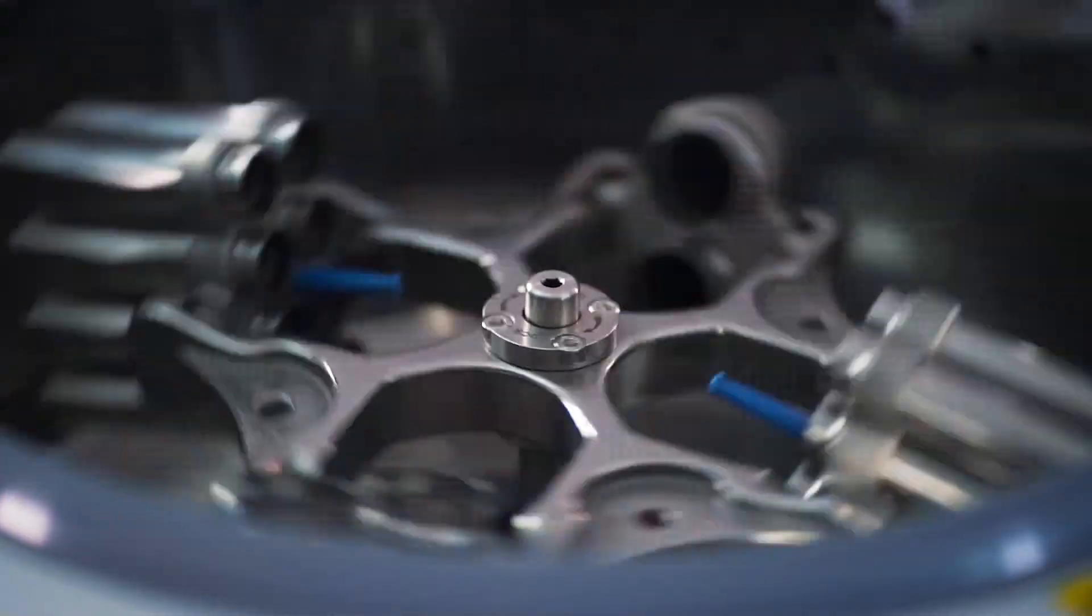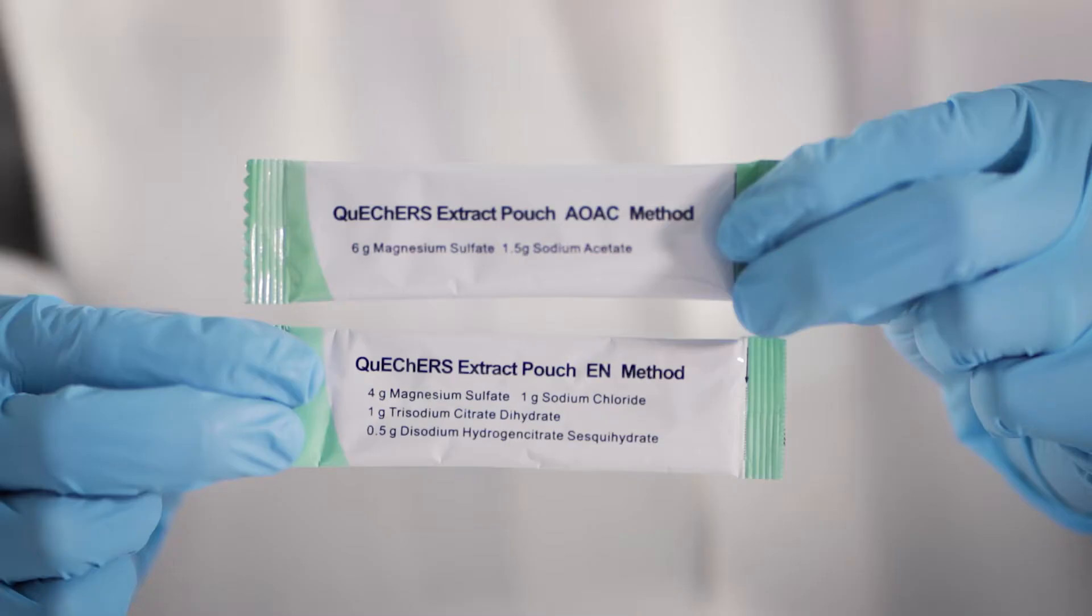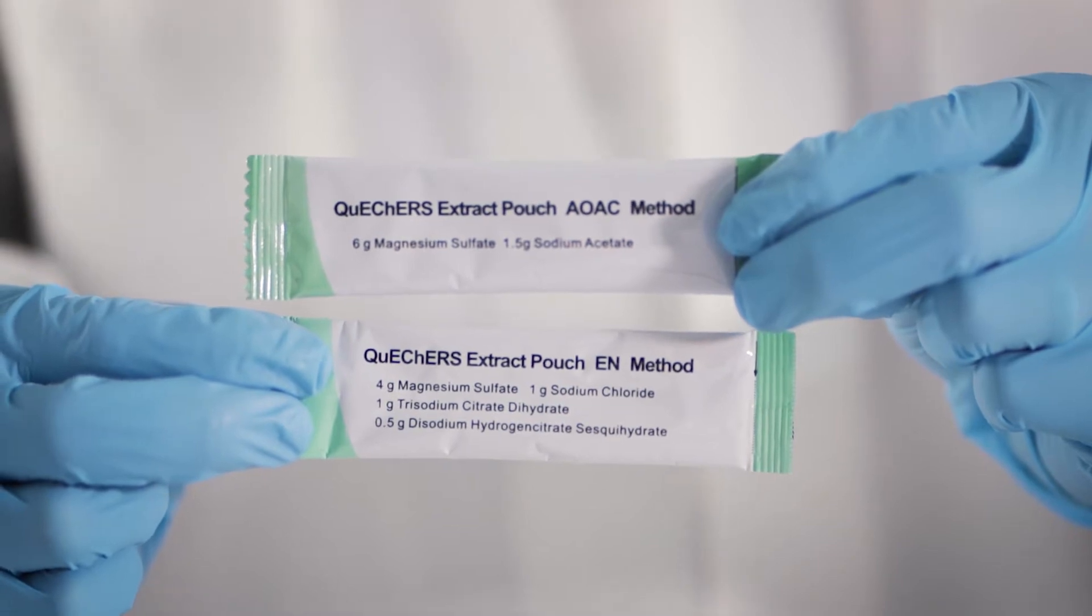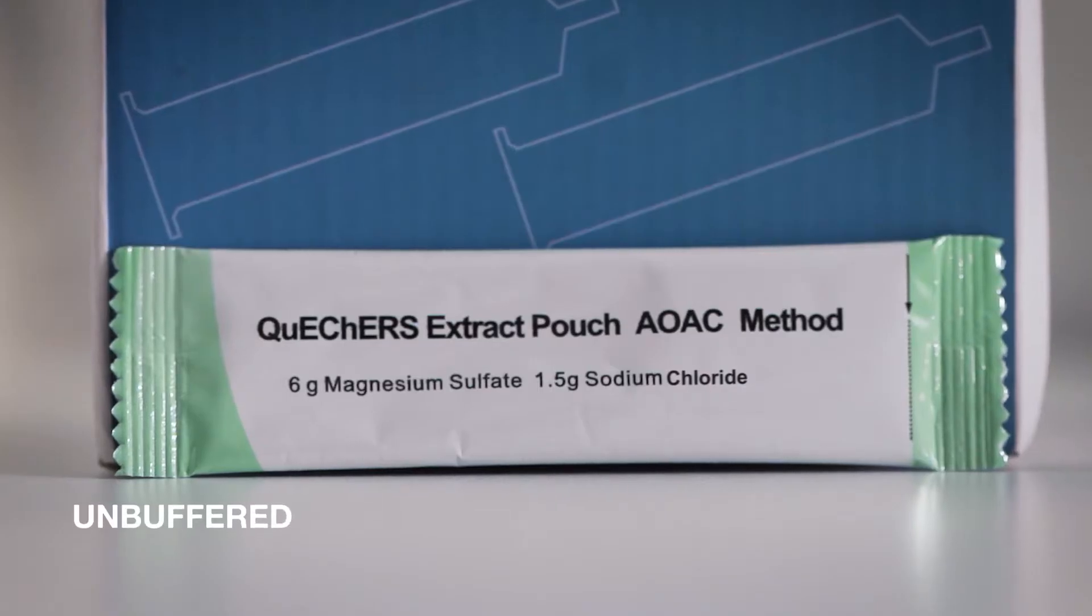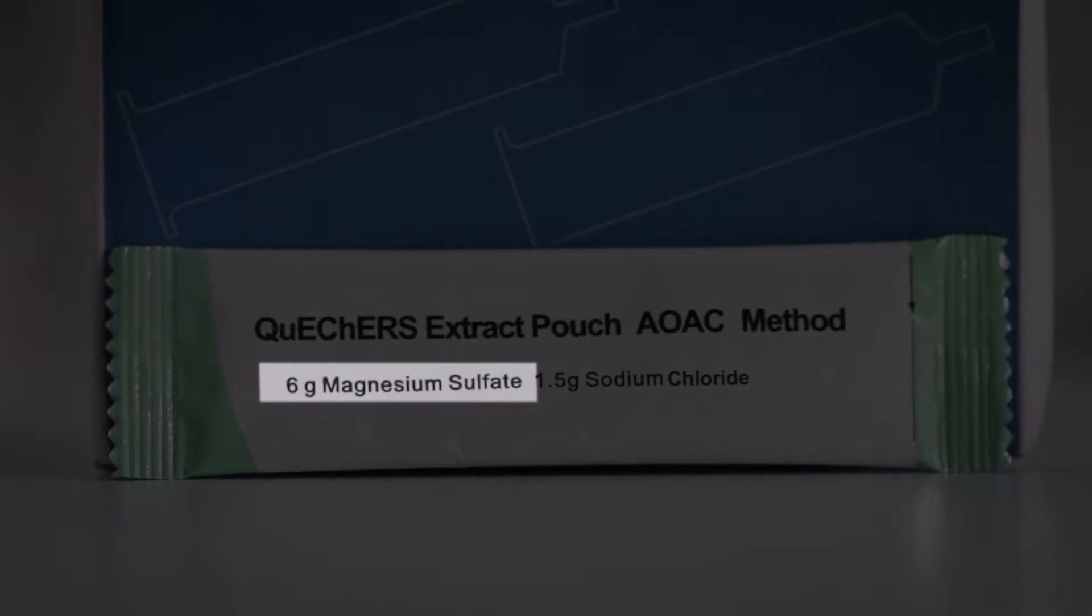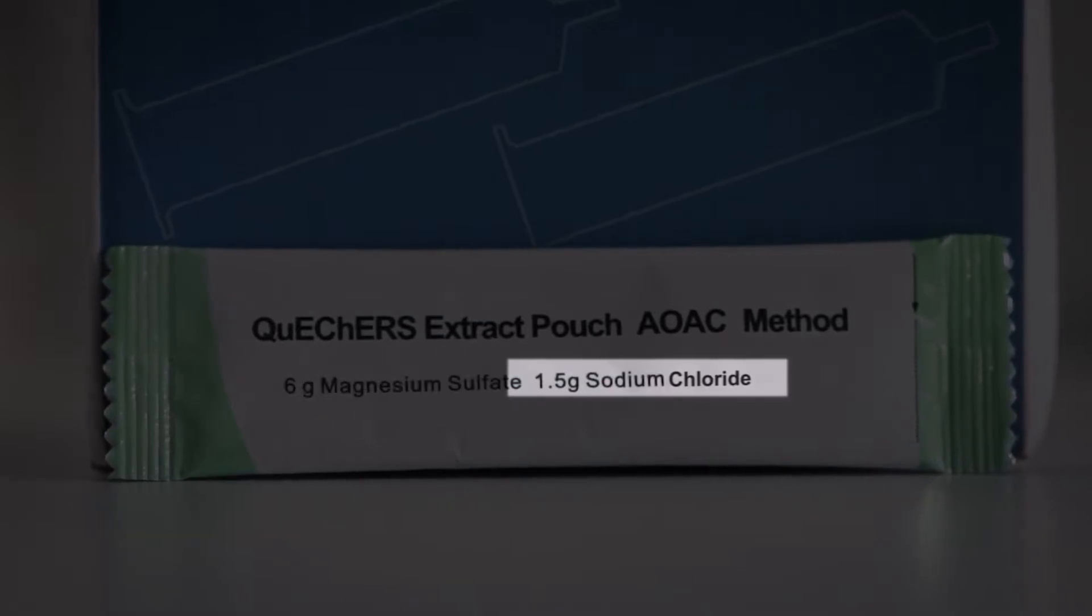Let's talk about these QuEChERS salts. The AOAC method has an unbuffered and buffered version. Unbuffered version is 6 grams of magnesium sulfate and 1.5 grams of sodium chloride. The buffered version, instead of the sodium chloride, you're using sodium acetate.